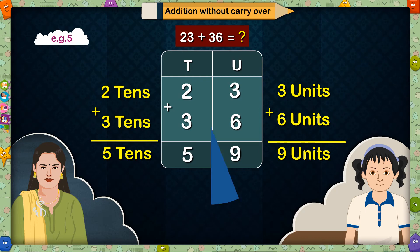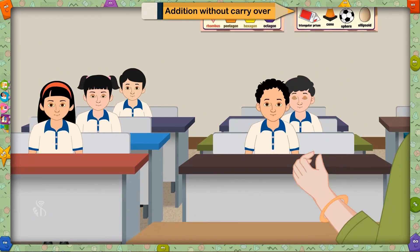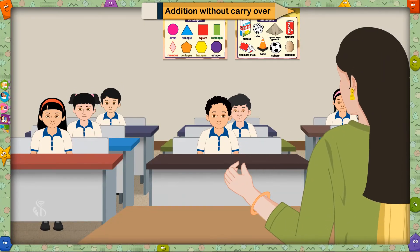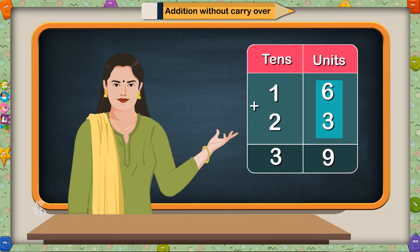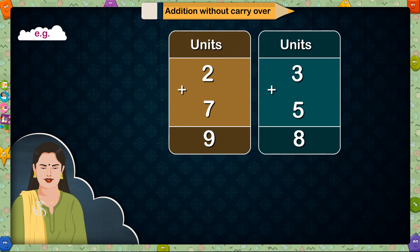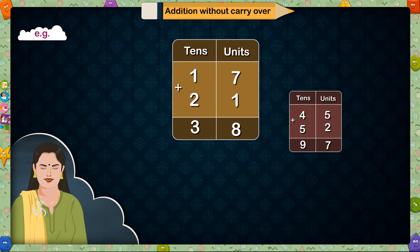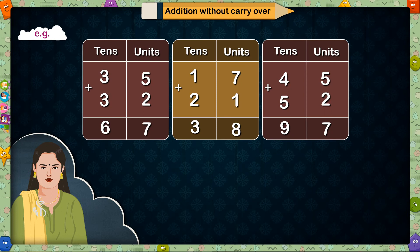All of you have answered very well. Now make your own sums and solve them. Children, so far I had given you the sums to solve and you were telling me the answers. Now you have to make your own sums and solve them. But please remember one thing: when you make your sums, the two numbers in the units place or tens place should be such that their addition is not greater than 9. For example: 2 plus 7, 3 plus 5, 3 plus 3 — these are all single-digit numbers and their addition is not greater than 9. Similarly for two-digit numbers: 17 plus 21, 45 plus 52, 35 plus 32. You should make sums in this way. Have you followed?